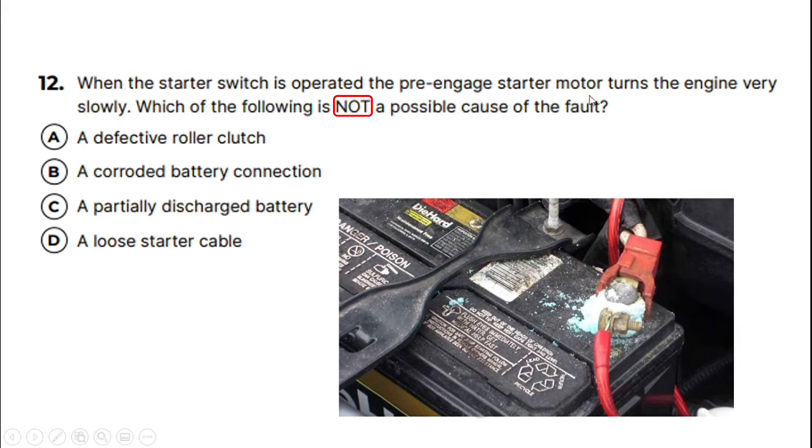Answer C, a partially discharged battery which is commonly called a flat battery - well if you've got less electricity in the battery, then obviously the starter motor would turn slowly because of that. So that would also be a cause of the fault. And the last one, a loose starter cable - so this cable here that goes down to our starter motor, if that was loose, that would be the same as having corrosion. It would offer a resistance so less electricity would be able to escape from the battery and go down to operate the motor. So answers B, C, and D would cause this problem, whereas the correct answer is A - a defective roller clutch is not the cause of the problem.